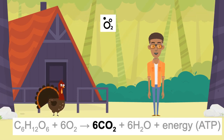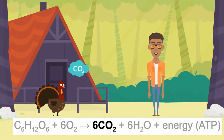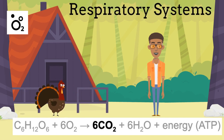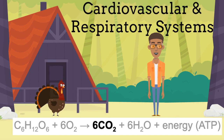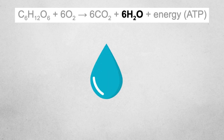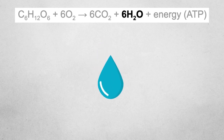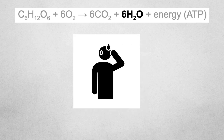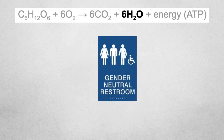The carbon dioxide produced during cellular respiration diffuses out of your cells and into your blood. It is carried to your lungs and you exhale it. Some of the water can be used in the body, and some of it leaves the body in sweat and urine.